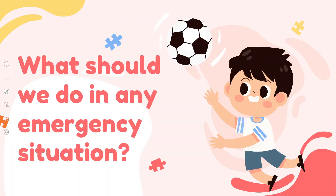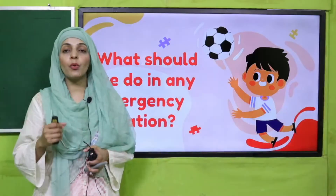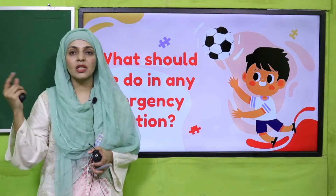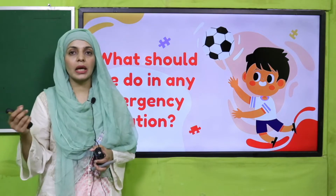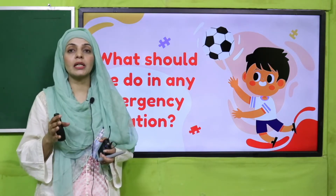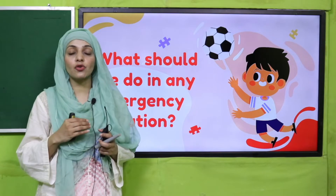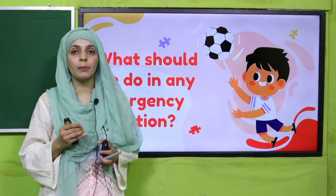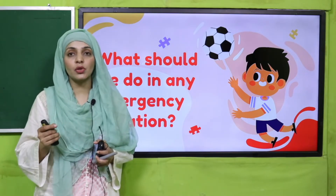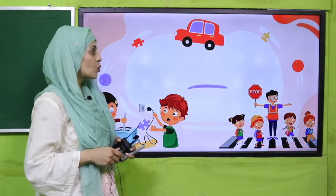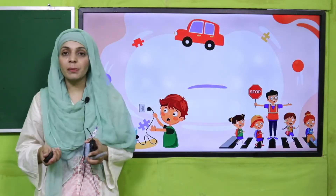So the pre-reading question: what should we do in any emergency situation? I taught you many emergency situations in which you can switch off the main switch, switch off the stove — but if you feel the situation is out of your control, then you have to call the emergency numbers, which are 1-1-2 and 1-5, so that you can be rescued.